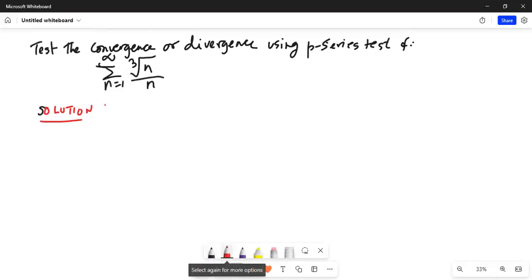So the series is n equals 1 through infinity, cube root of n by n. That can be written as the summation n equals 1 to infinity, cube root of n. I can write n to the power of one-third divided by n.